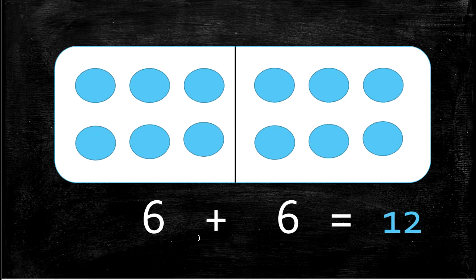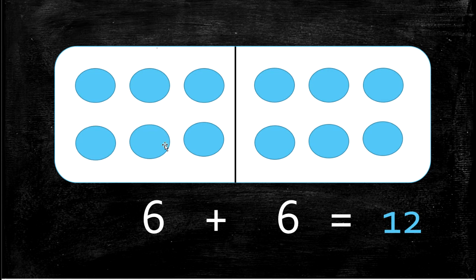Our next double is 6 plus 6 equals 12. So 12 divided evenly is 6 and 6. We have 1, 2, 3, 4, 5, 6 on this side and 1, 2, 3, 4, 5, 6 on this side — equals how many all together? 1, 2, 3, 4, 5, 6, 7, 8, 9, 10, 11, 12. Because 6 plus 6 equals 12.